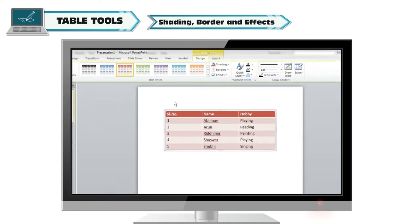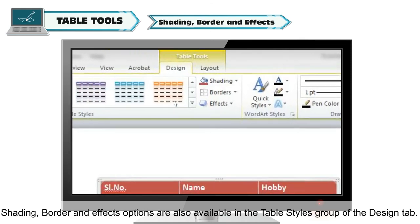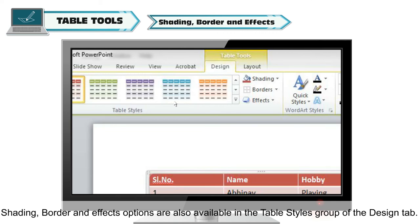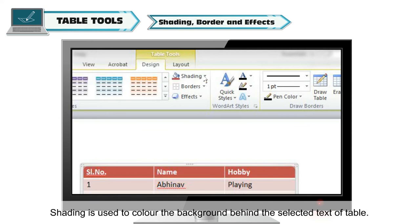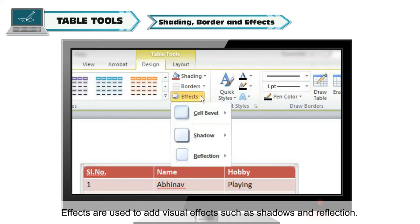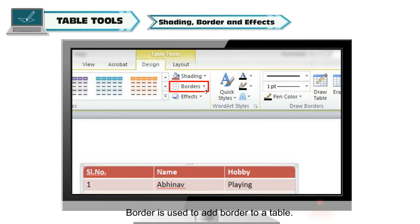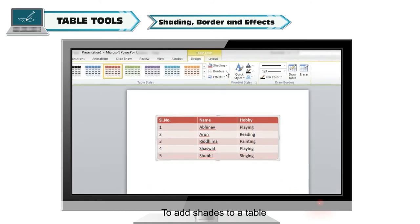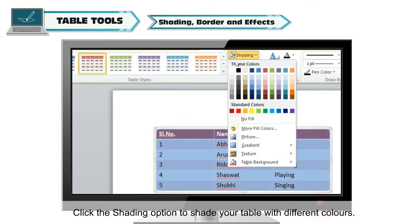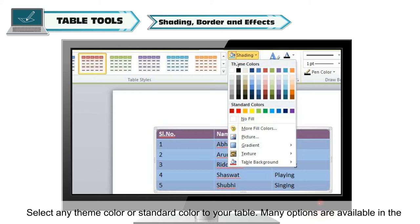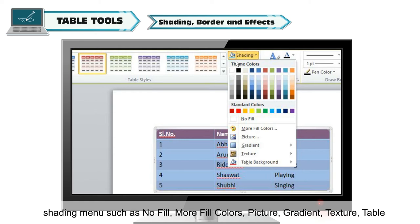Shading, Border, and Effects options are also available in the Table Styles group of the Design tab. Shading is used to color the background behind the selected text of tables. Effects are used to add visual effects such as shadows and reflections. Border is used to add a border to a table. To add shades, click the Shading option; a Shading menu will appear where you can select any theme color or standard color. Options available in the Shading menu include No Fill, More Fill Colors, Picture, Gradient, Texture, and Table Background.